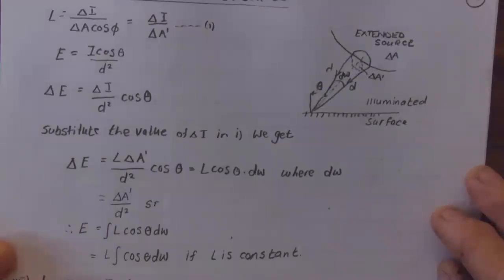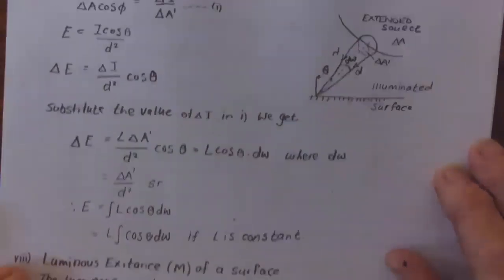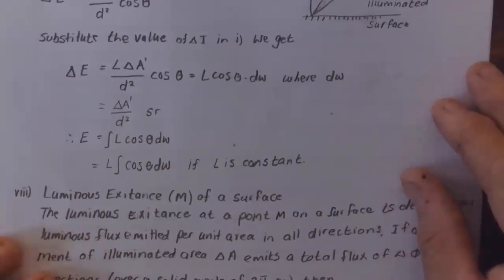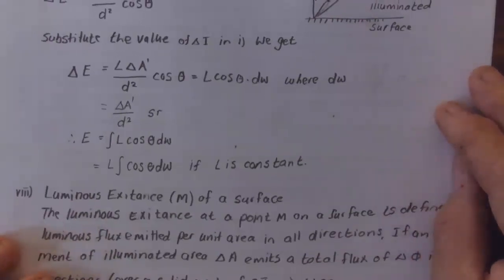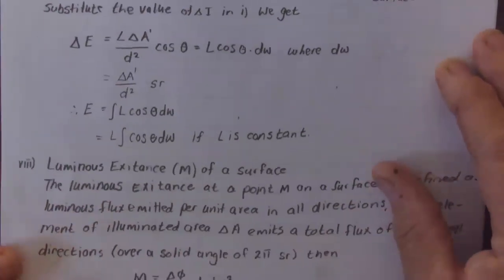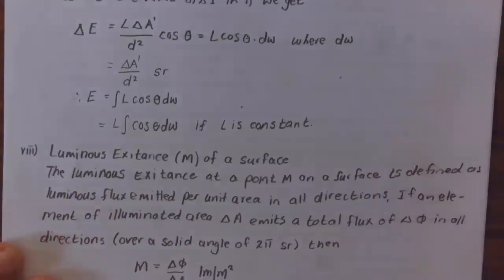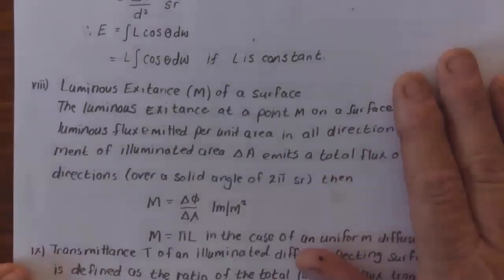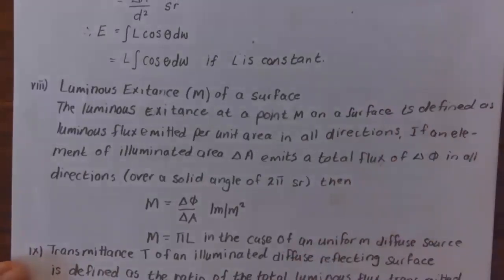The equation falls on an area, and the cosine of that area gives the perpendicular area to the source. Substituting the value of ΔI into equation one, we get ΔE = L·ΔA'/d² × cos(θ), which is L·cos(θ)·dω, where dω = ΔA'/d² radians. Therefore E = ∫L·cos(θ)·dω, and if L is constant, E = L∫cos(θ)·dω.